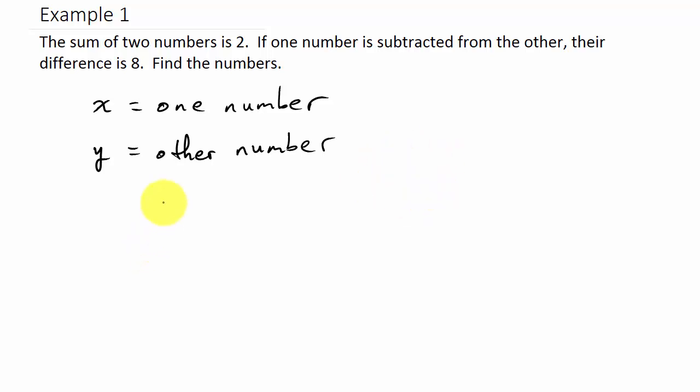Alright, so what does it say? It says the sum of these two numbers is two. Okay, well let's write that down. So, the sum of the two numbers, so x plus y, that means add the two. That would give me two as an answer.